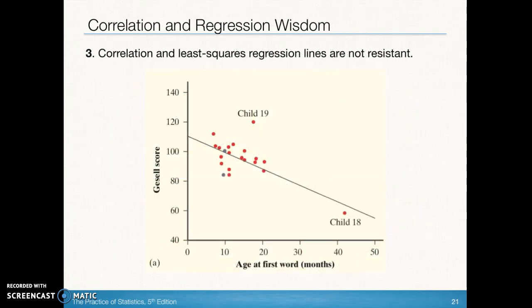Number three: correlation and least squares regression lines are not resistant. When we take away child number 18 and we just look at this cluster of points we may see something very different. Child number 18 actually strengthens this value of r. Child number 19 would detract from the value of r or the correlation coefficient because it's off the pattern. Now 18 is also off the pattern in terms of being way further away, but it actually would strengthen our value of r.